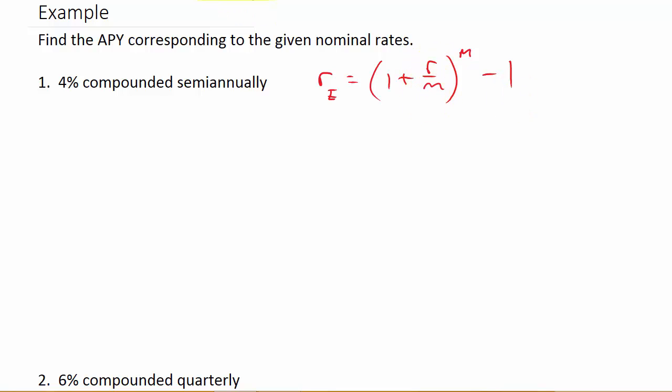And then we plug them in. Here I have R is equal to 4%, so that's 0.04. M, it's compounded semi-annually, so M would be 2. And so we just plug this in. Raised to the M, which is 2 minus 1.